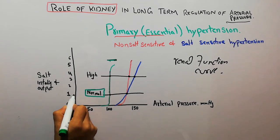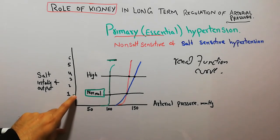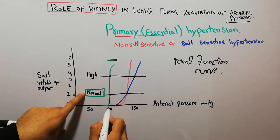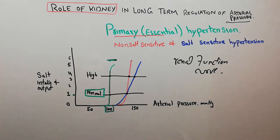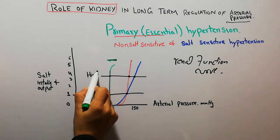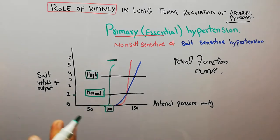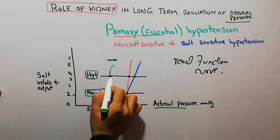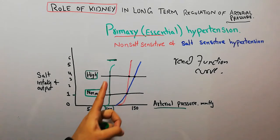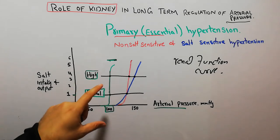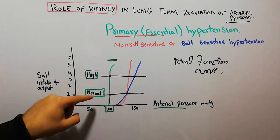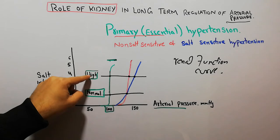At a normal level of salt intake, the arterial pressure of a normal person remains around 100 mmHg. Even if we increase the salt intake, there will be maybe a slight movement, but ideally there will be no significant change in the arterial pressure of a normal person with normal or high salt intake.